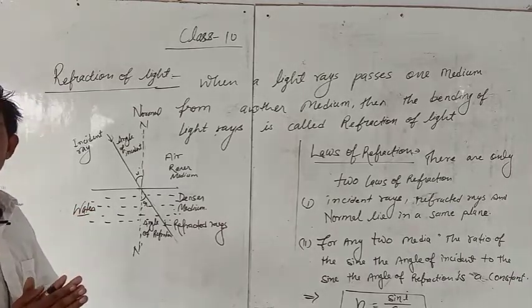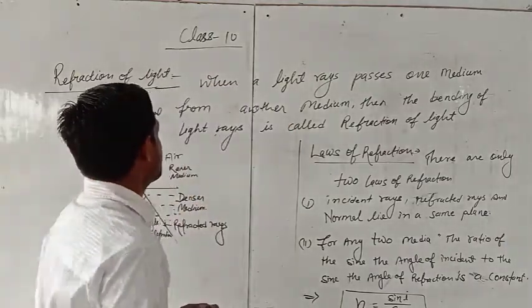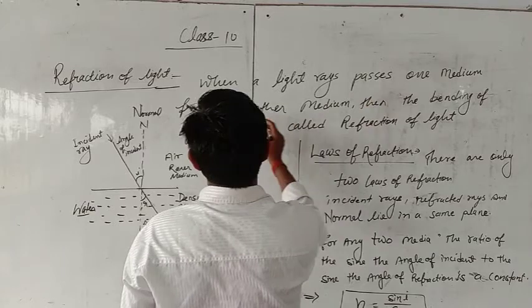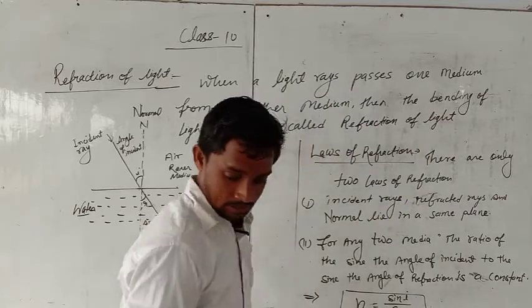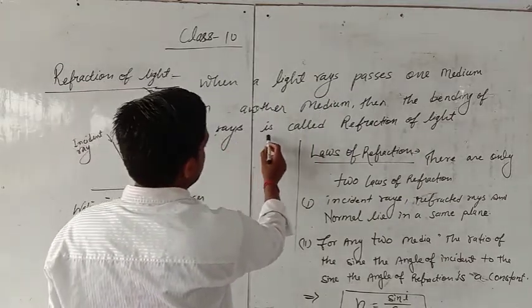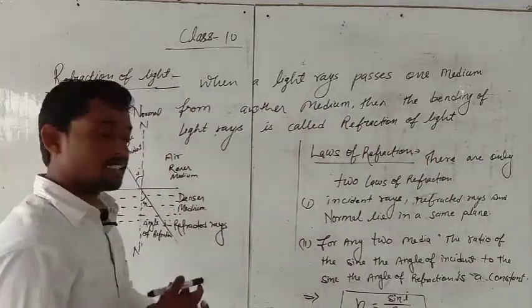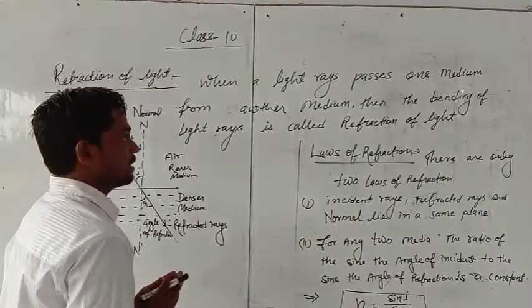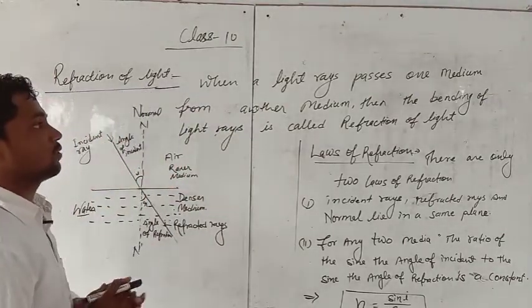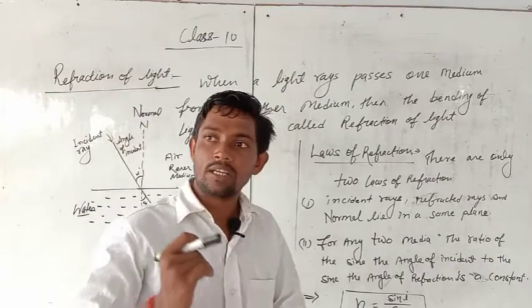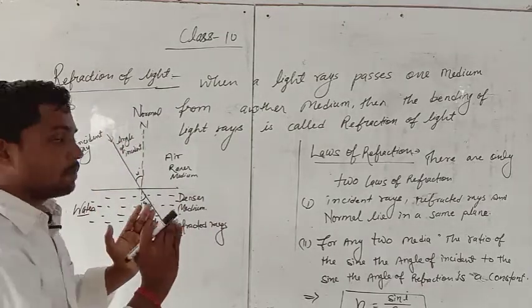Reflection of Light means Prakash Ka Puritan. This definition is: when a light ray passes from one medium to another medium, then the bending of light rays is called Reflection of Light. It means when Prakash Ka Puritan comes from one medium to another medium, then it turns on its path. This event is Reflection of Light.